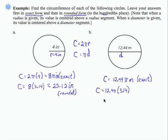I'm going to get 12.44 times 3.14 multiplied and rounded to the nearest hundredth is 39.06. That is also in meters.